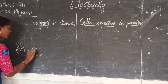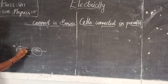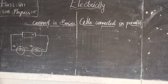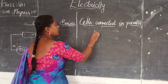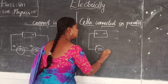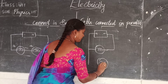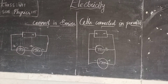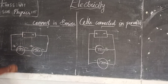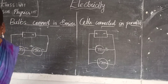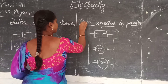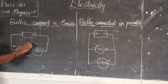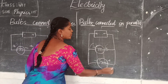Now we look at bulbs connected in series and parallel. These are two bulbs. Connected in series: this is the positive terminal, this is negative, connected to the core terminal, and this negative is connected to the battery. In series, positive to negative and negative again with the positive; here also positive to negative, negative to positive. Whereas in parallel, all the negatives are on one side and positives on one side.